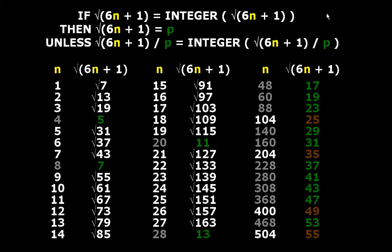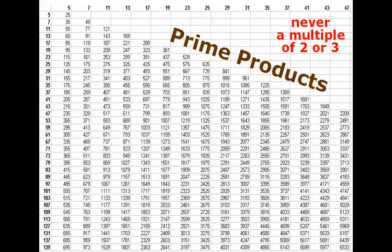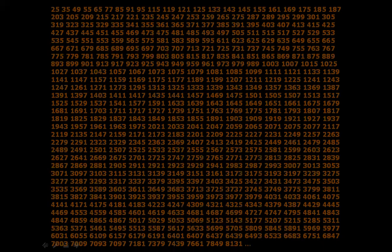Let's look at the brown numbers — I call them the prime products. The prime products are shown here in this table. Please notice that 2 and 3 are not considered primes here, so you will never find a multiple of 2 or 3 in this table. The rhythm of the primes is actually the rhythm of the prime products. The rhythm of the primes is the reverse of the primes, meaning the prime products.